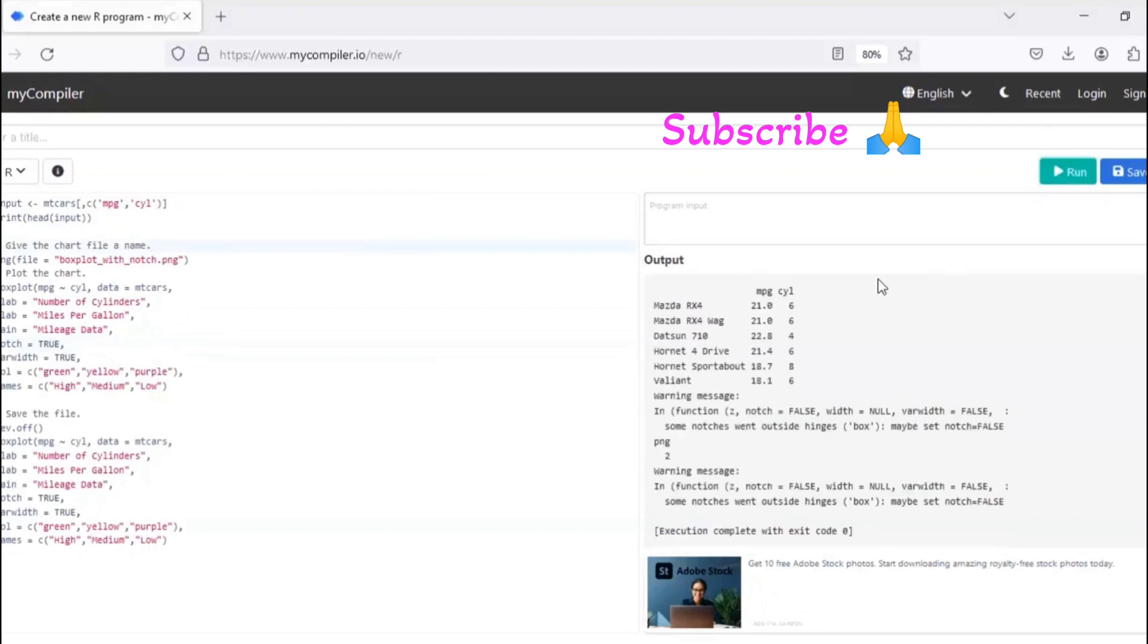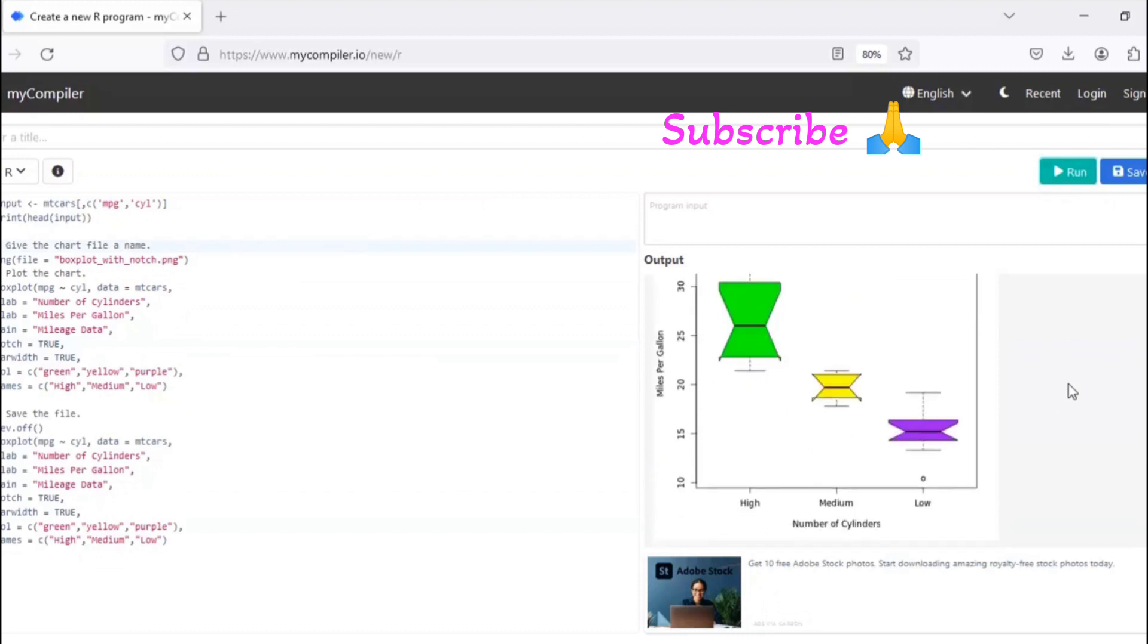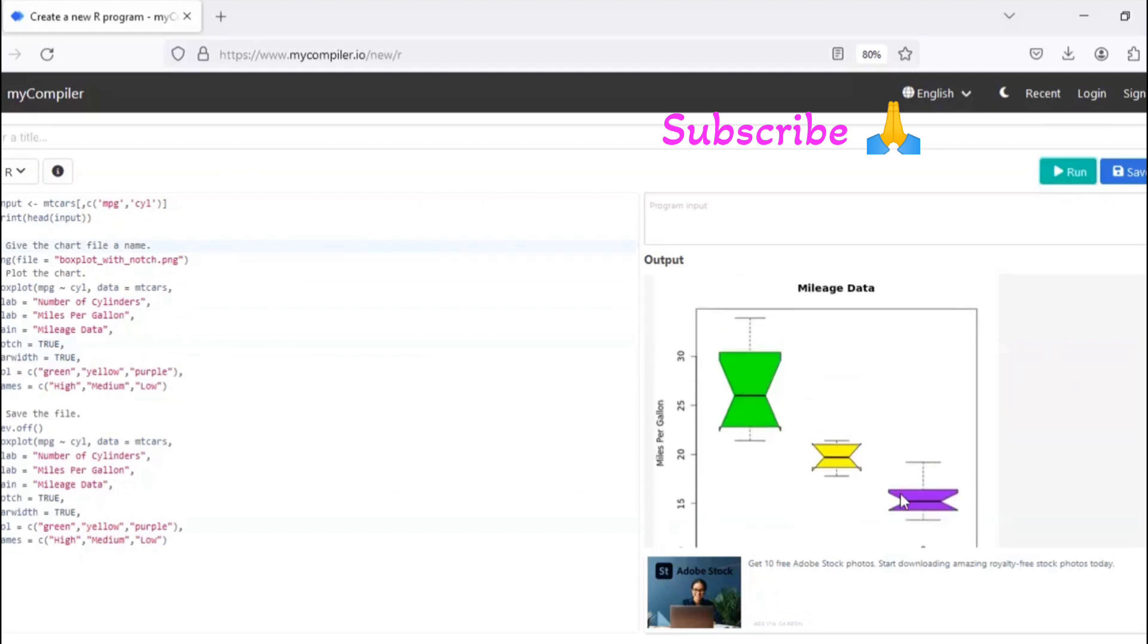Output we could see miles per gallon and the number of cylinders. Accordingly the boxplot output we could get, it is divided into the three types so like high medium and low. And from that available data this boxplot is generated.